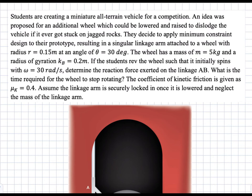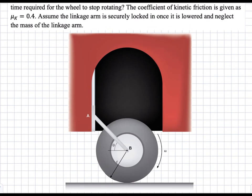In this problem we have a wheel that is rotating. We're asked to find, given the conditions, the reaction forces of link AB and the normal force acting between the wheel and the ground. Then we're asked to find, given an initial angular velocity, the time required for the wheel to come to a complete stop. We're given the coefficient of friction, the geometry, the mass, and the radius of gyration of the wheel.